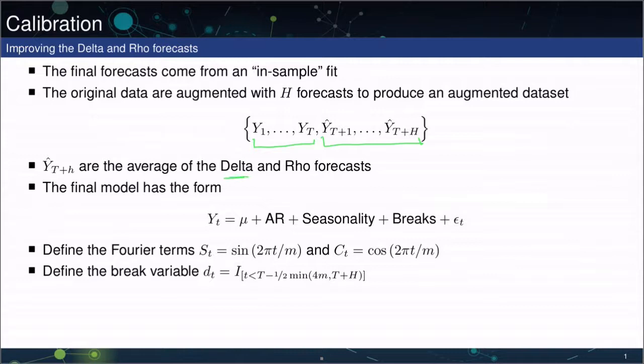And these are simply going to be the average of the delta and the rho forecasts. So for example, y hat t plus 1 is really one half y hat t plus 1 rho plus y hat t plus 1 delta. So that is all I need to do to construct these augmentation variables. And then what calibration does is it fits a model to this joined up series. It does include the original data, but it also includes the augmentation from these forecasts.